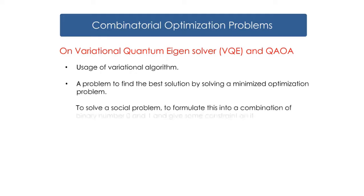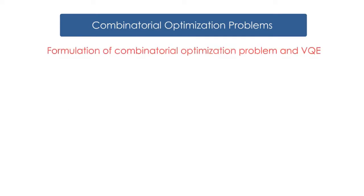If you want to solve a social problem, formulate this into a combination of binary numbers 0 and 1 and give some constraint on it. Then next, the formulation of combinatorial optimization problem and VQE. The formulation thinks the Hamiltonian is a cost function for social problems and tries to find the best answer from the qubits.